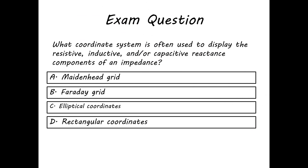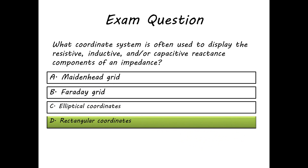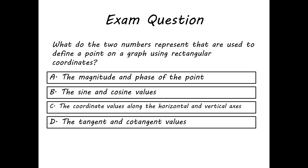Now let's hit the exam questions having to do with what I've been talking about. First one: what coordinate system is often used to display the resistive, inductive, and/or capacitive reactive components of impedance? That would be the one that the landlubbers like — the rectangular coordinate system, covered in them annoying little rectangles.